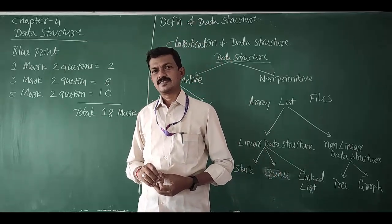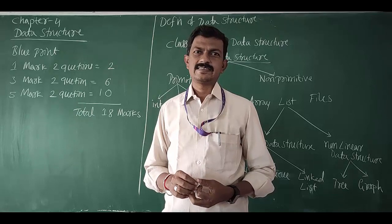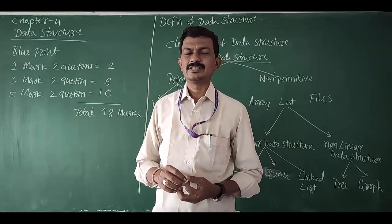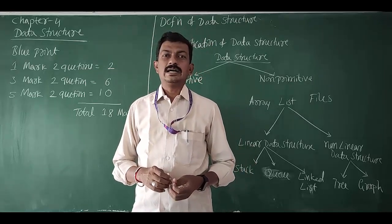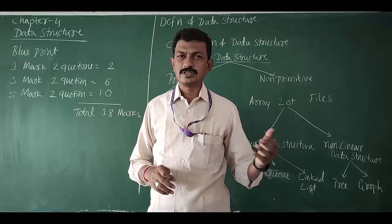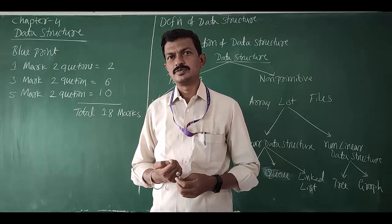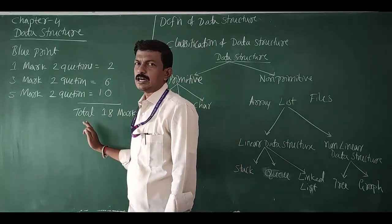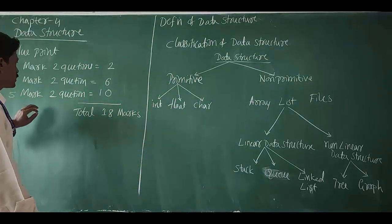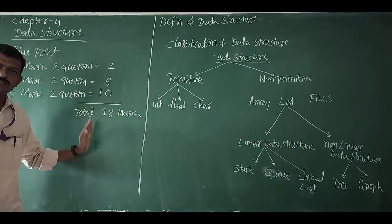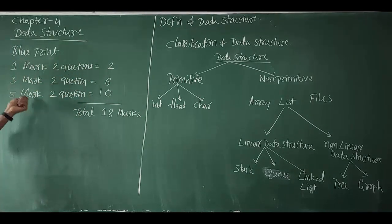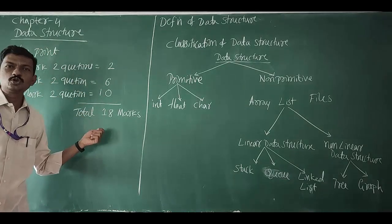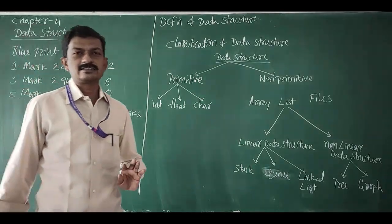Before we start discussing the data structure chapter, I am going to deal with the blueprint. How many questions are there for your annual examination under the 30 percent reduced syllabus? It is a blueprint of the data structure chapter. We are going to get a total of 6 questions from this chapter: 2 questions from 1 mark, 2 questions from 3 marks, and 2 questions from 5 marks.